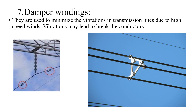The seventh important component required for overhead lines is damper windings. Damper windings are provided in transmission lines to minimize vibrations in the transmission line due to high speed winds, because vibrations may lead to the breaking of the conductors.